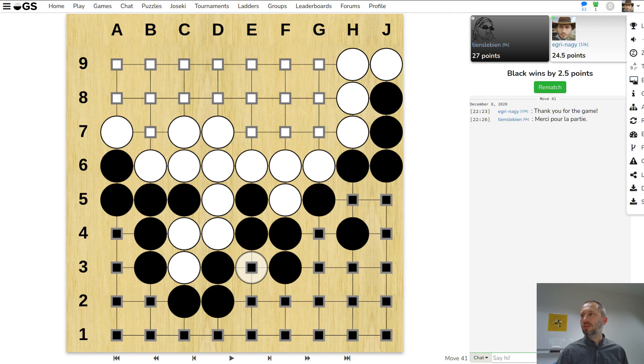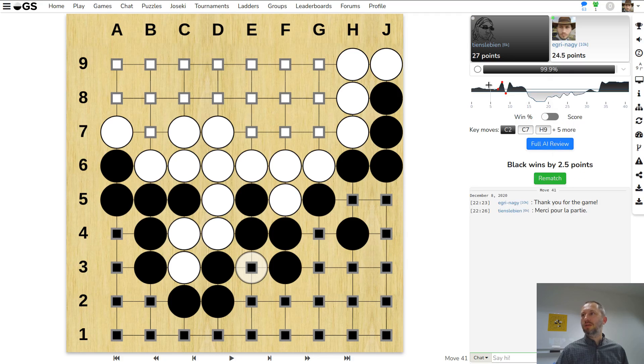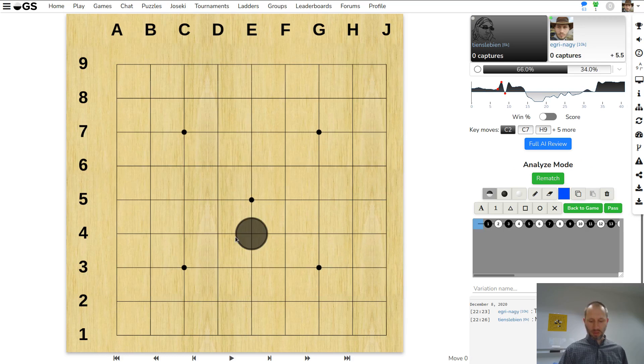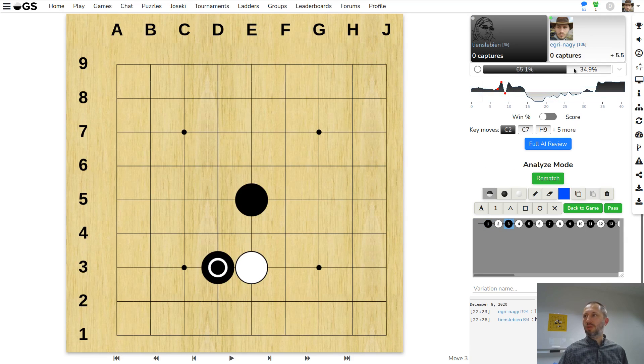This graph is the win rate graph, so it tells you who is winning and with what probability. You can actually go through all the moves and the win rate bar will tell you what's the probability that black is winning and what's the probability that white is winning.